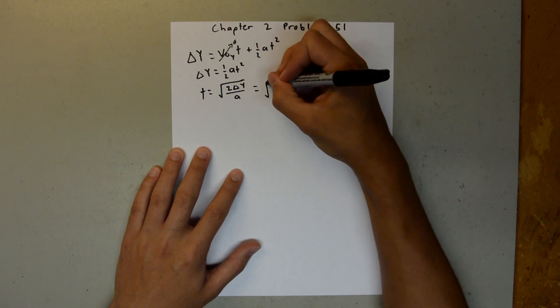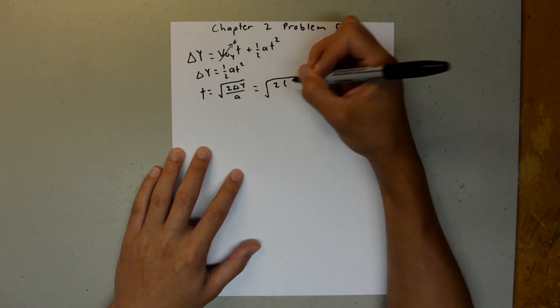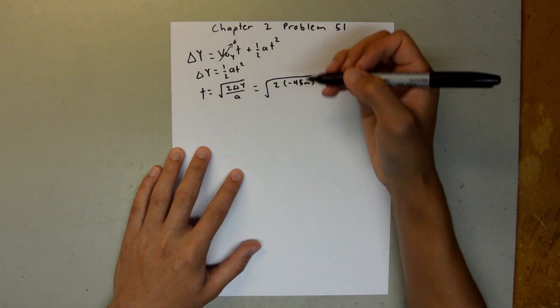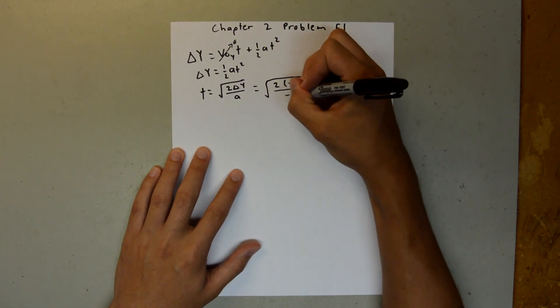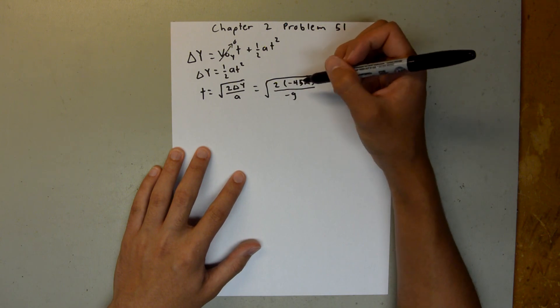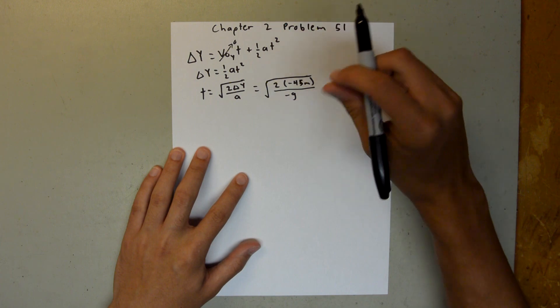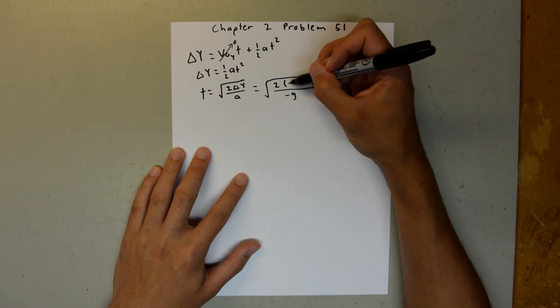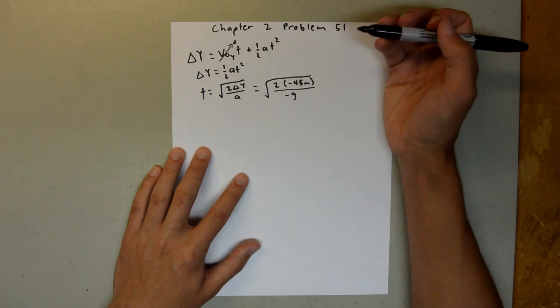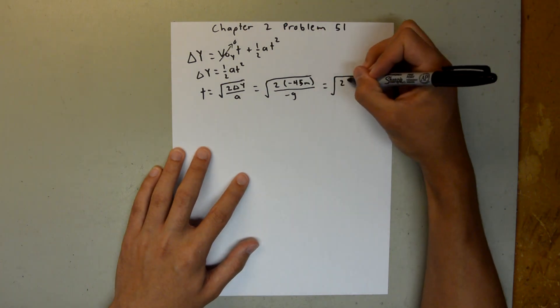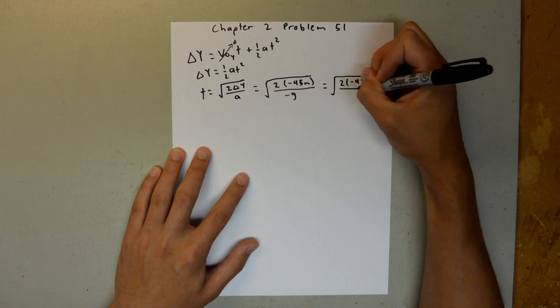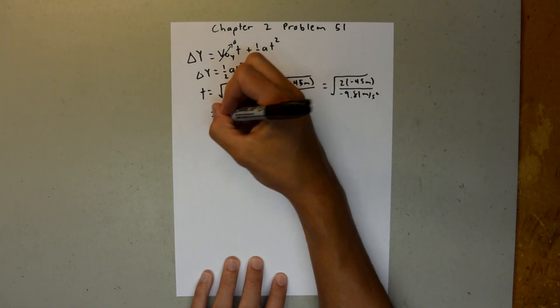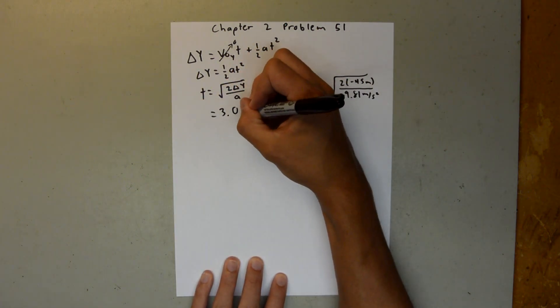So we can plug them right in. This is going to become the square root of 2 times negative 45 meters, since it's being dropped in the y direction, divided by negative g. It's always important to make sure you get the right direction of motion. In this case, I'm saying up is positive and down is negative, so the motion is negative and the acceleration is negative, and it works out because these two negatives will cancel. So this is going to become 2 times negative 45 meters over negative 9.81 meters per second squared. And when you plug that into your calculator, you should get 3.03 seconds.